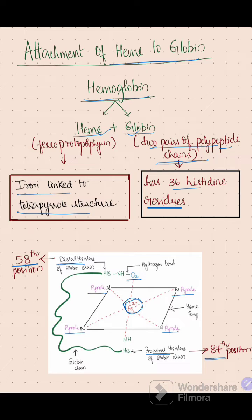Distal histidine is linked to the iron molecule along with water in deoxygenated hemoglobin. In oxygenated hemoglobin, oxygen is present between the histidine residue and iron molecule, whereas in deoxygenated hemoglobin, a water molecule is present.